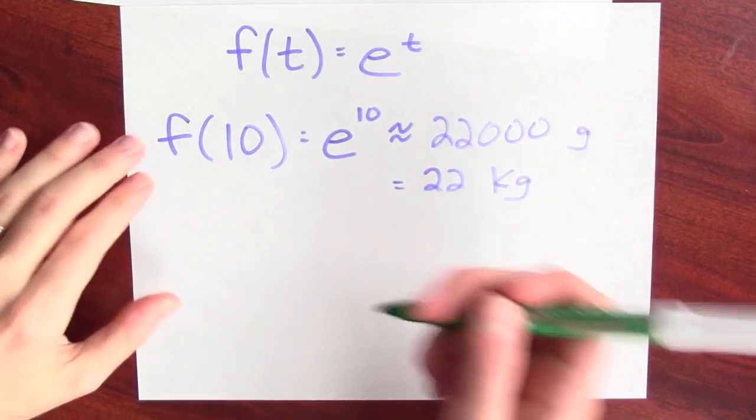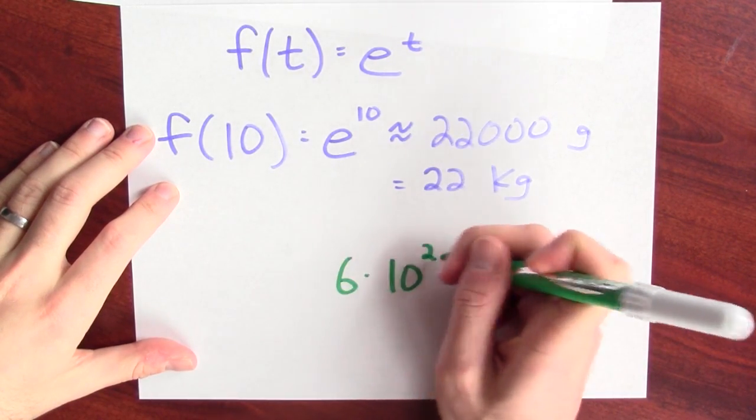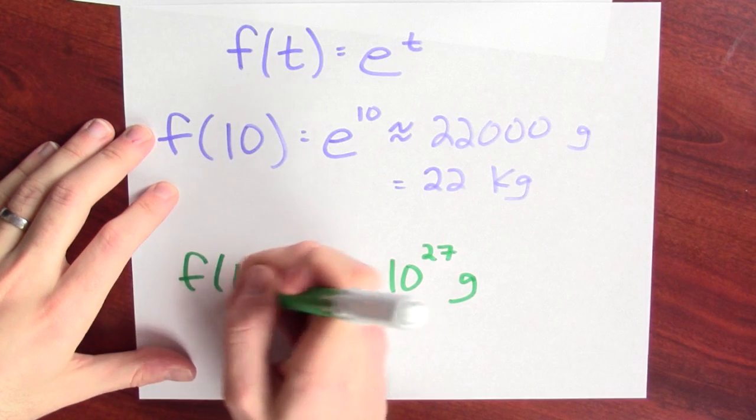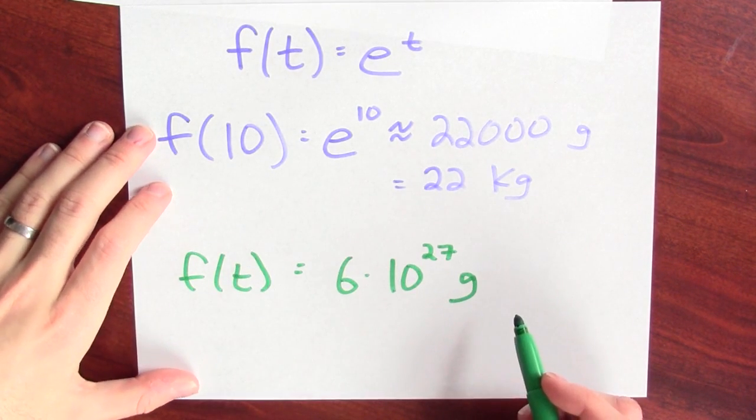Here's the big question. How long will it take until the entire Earth is converted into gray goo? The mass of the Earth is about 6 times 10 to the 27th grams. I'm looking for a time so that f of t is 6 times 10 to the 27th. In other words, I'm trying to find a value of t so that e to the t is 6 times 10 to the 27th.